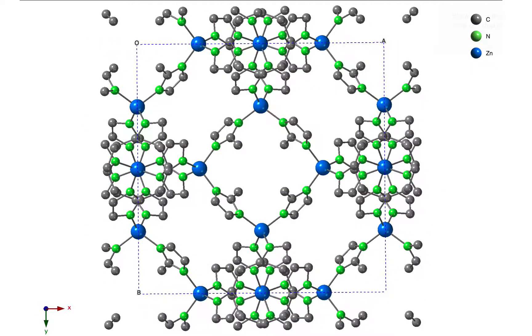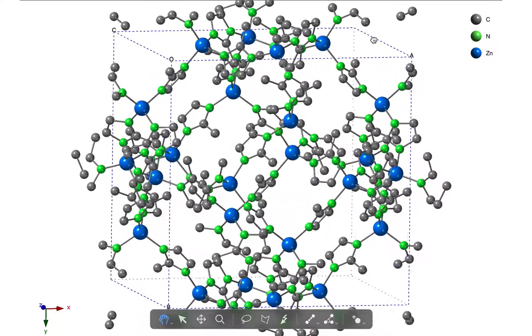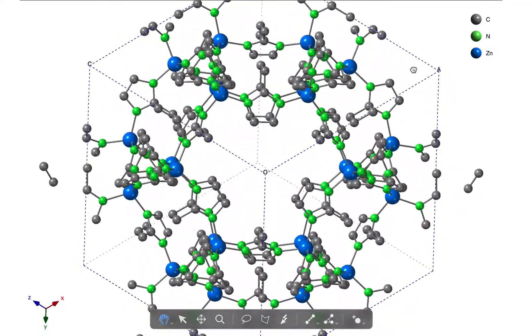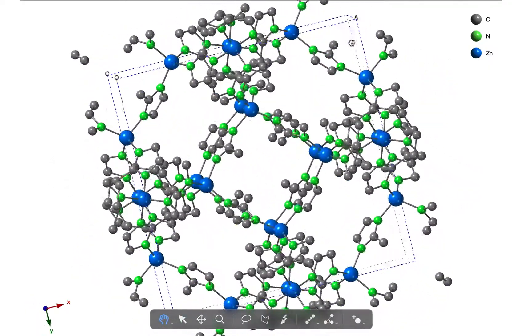We're going to start off with this metal-organic framework structure. If we rotate the structure you can see that although it's rather complicated, there is a large cavity within this material.